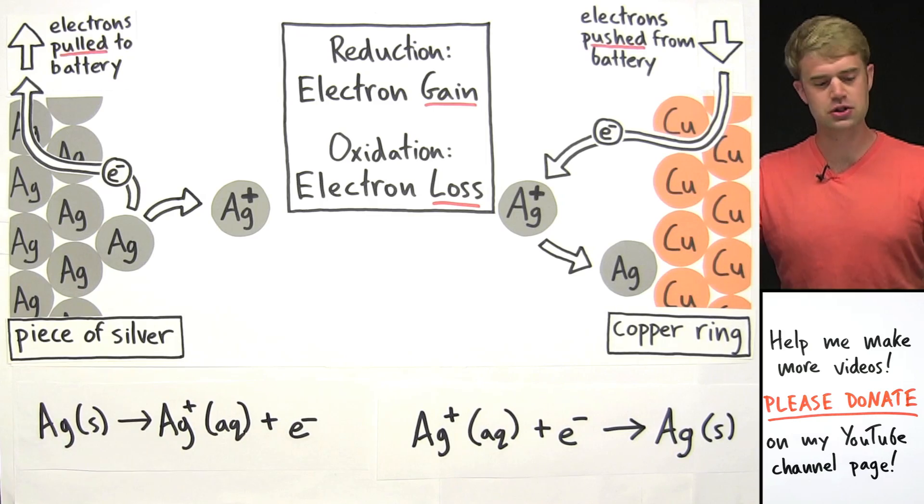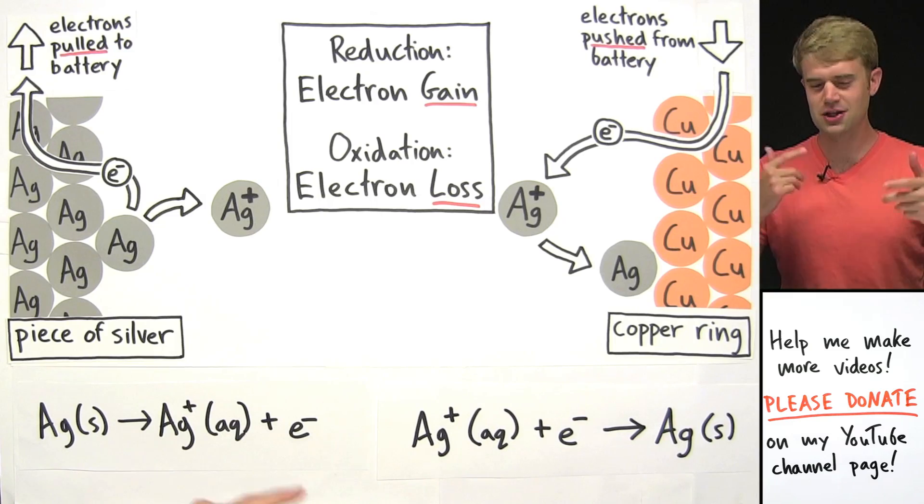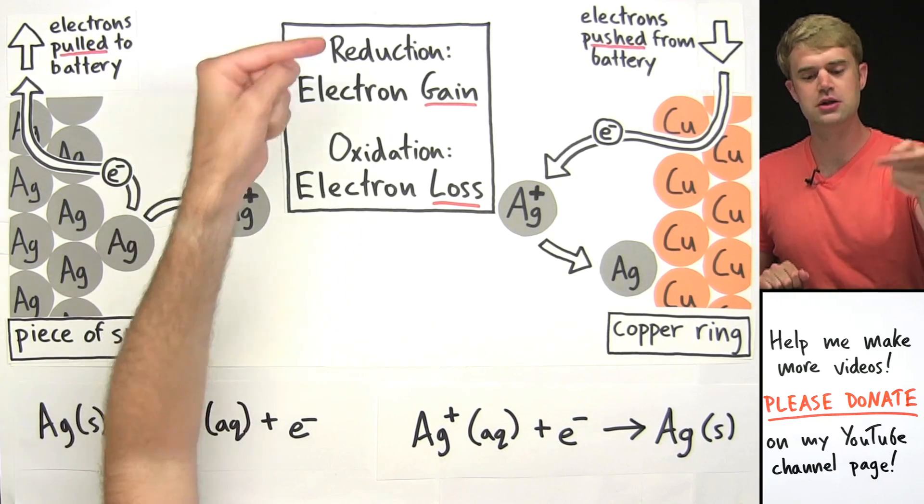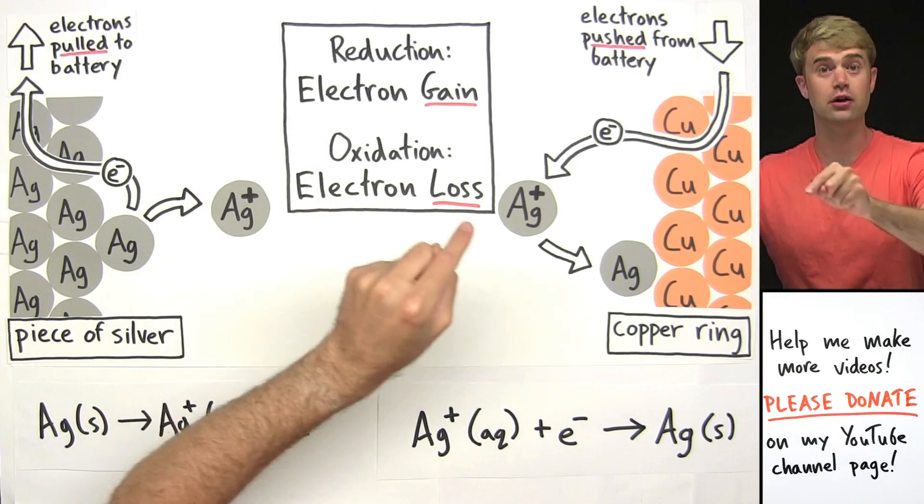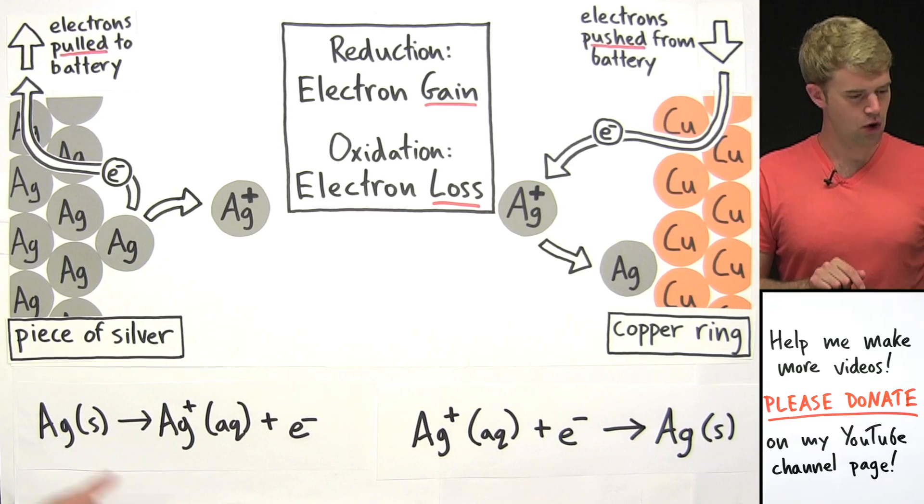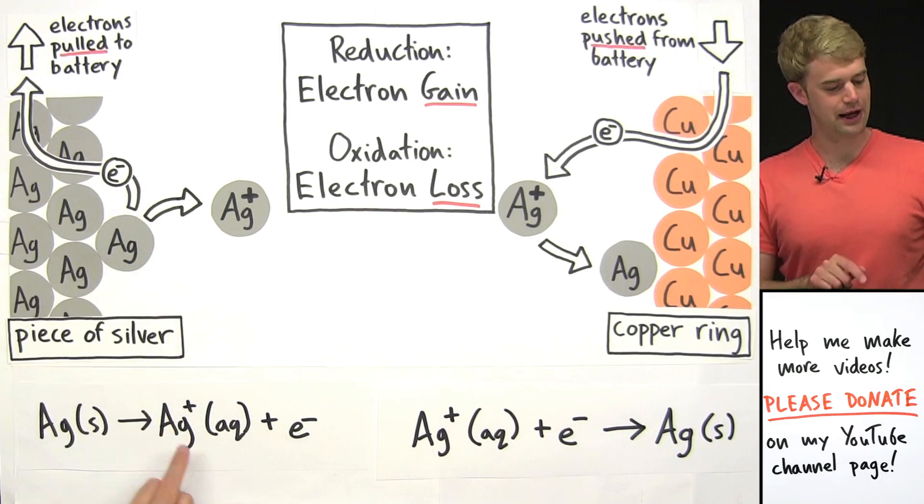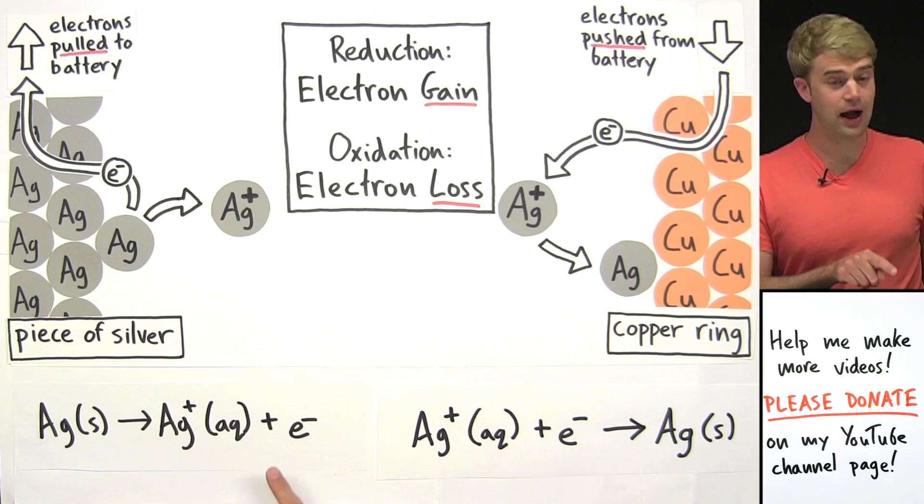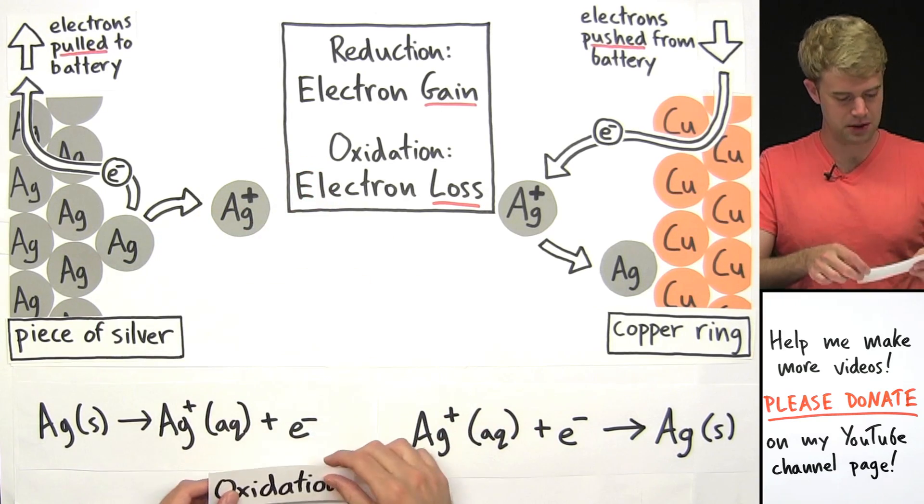Now I want to talk about what's going on here in terms of oxidation and reduction. So just to refresh your memory, reduction is electron gain, and oxidation is electron loss. So what's happening over here on the piece of silver? Well, we have these neutral silver atoms that are losing electrons, turning into ions. So loss of electrons over here on the piece of silver, oxidation is taking place.